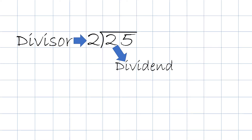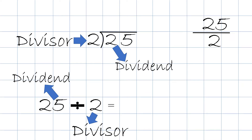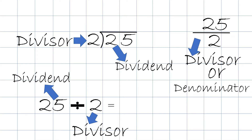Another way to write it out is the long way, where we write out 25 divided by 2. Once again, 25 is the dividend and 2 is the divisor. And another way to write 25 divided by 2 is in a fraction format, where we write 25 on top and 2 on the bottom. And 2 will be the divisor or the denominator.